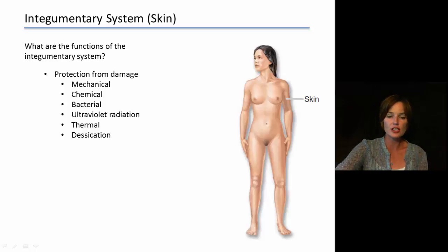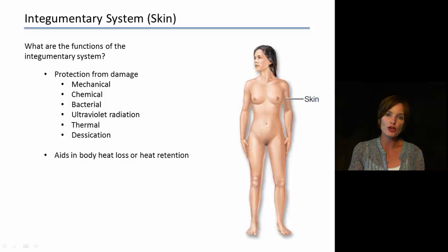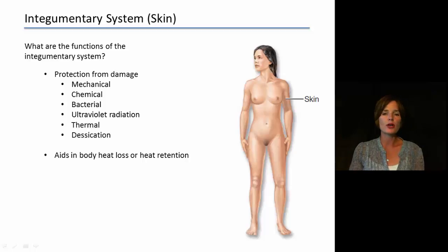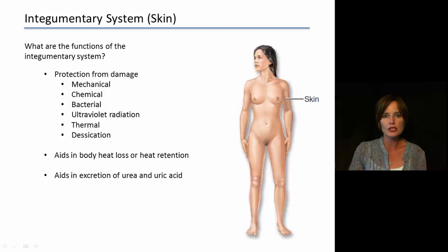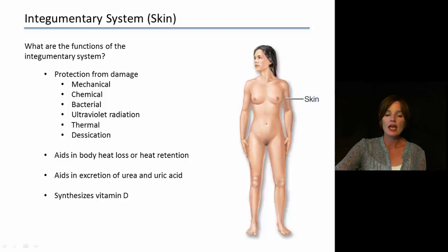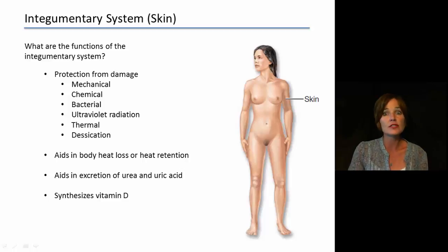Other functions of our skin include regulation of body temperature, helping us get rid of excess heat when overheated and retain heat in cold surroundings. The skin also helps get rid of some waste molecules — we have the ability to excrete urea and uric acid from the surface of our skin. And it is involved in synthesizing vitamin D, which happens in the presence of sunlight.